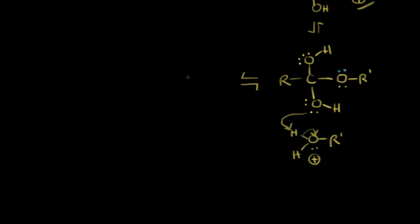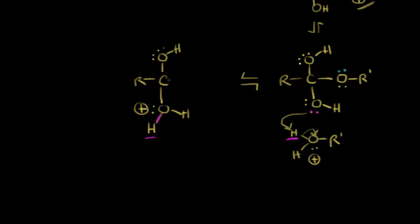The reason why this protonation is favored is because it's going to create an excellent leaving group — water. This oxygen at the bottom has been protonated and has a plus one formal charge. These electrons on this oxygen pick up the proton, forming a bond to it. In the next step, water forms as our leaving group. When the electrons on the top oxygen move in to reform the double bond, the electrons in blue come off onto the oxygen, and water leaves as an excellent leaving group.